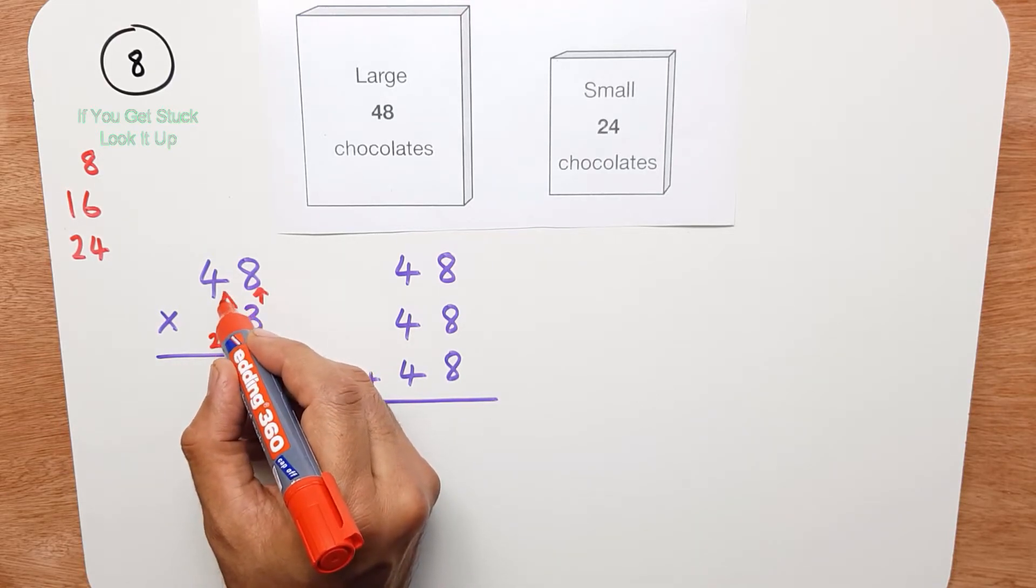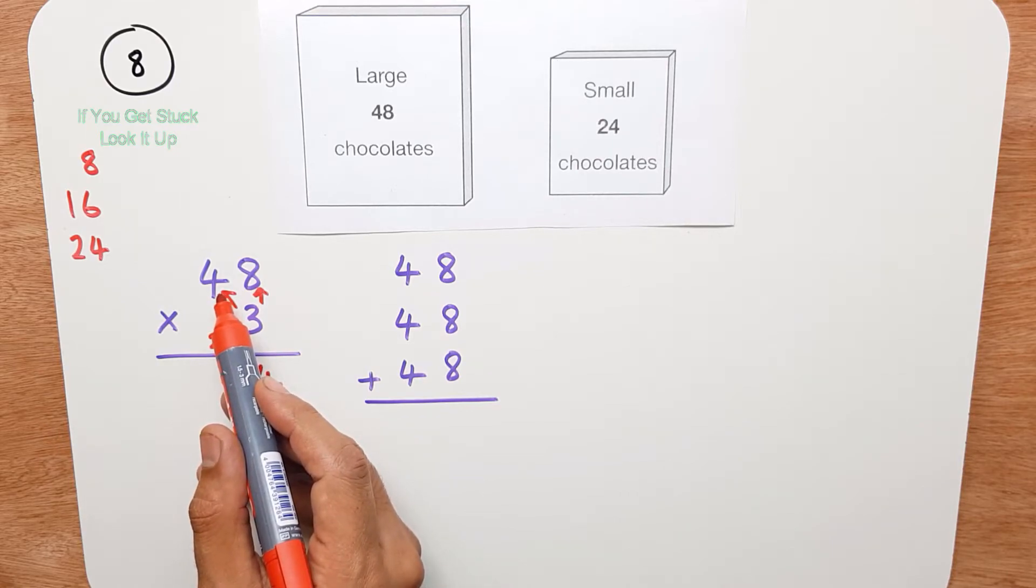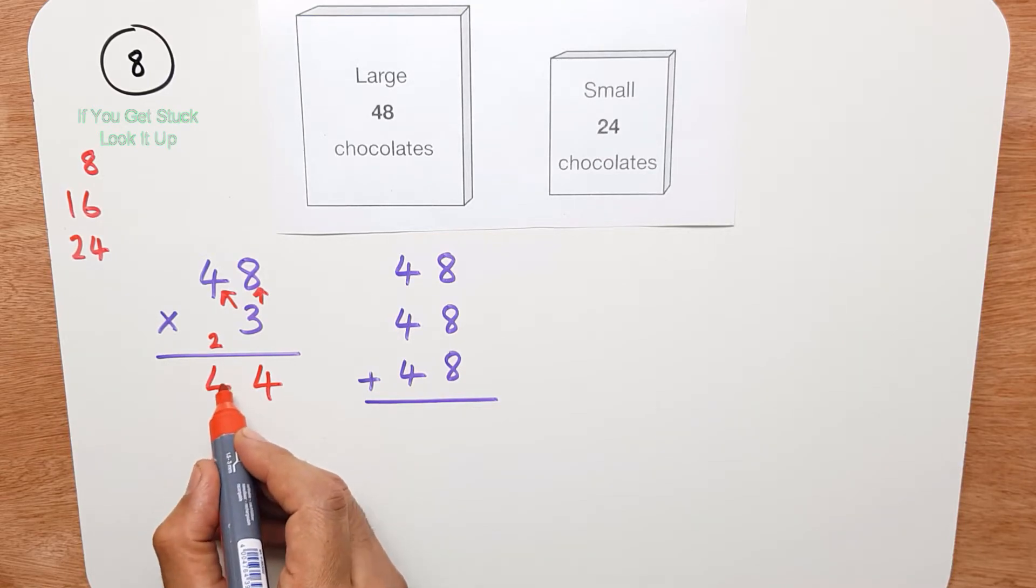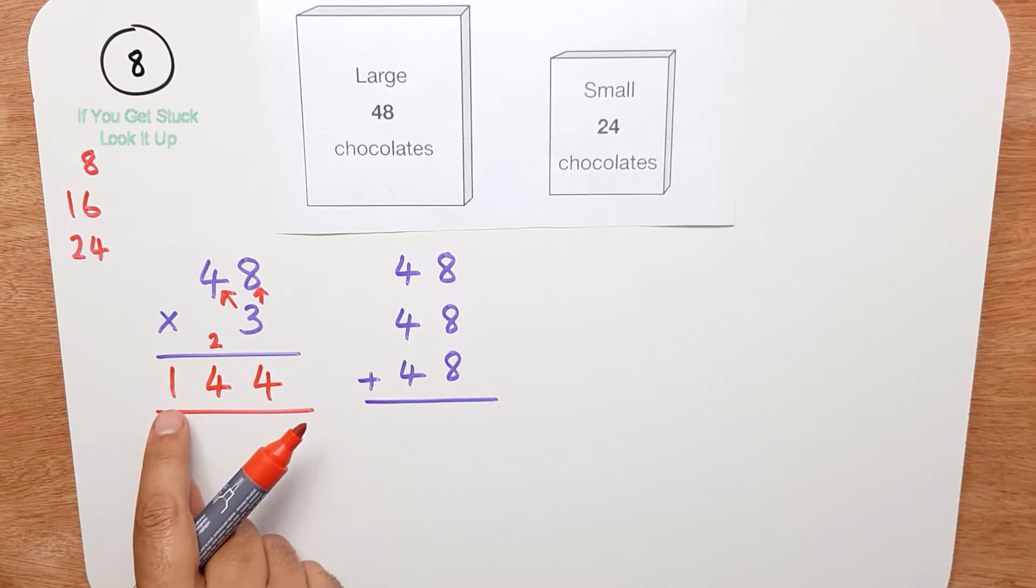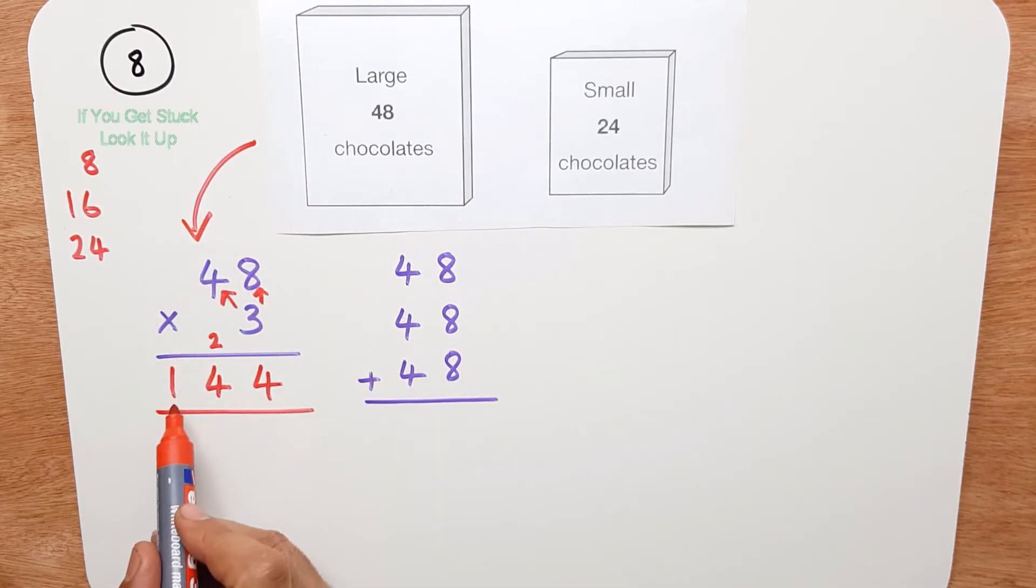Now I do 3 times 4, and 3 times 4 is 12, plus the 2 that I've carried over is 14. So I put 4 down here, and I carry the 1 over to the next column. And I can write it straight down, because there's nothing else to do in this calculation. So them 3 boxes will have a total of 144 chocolates.